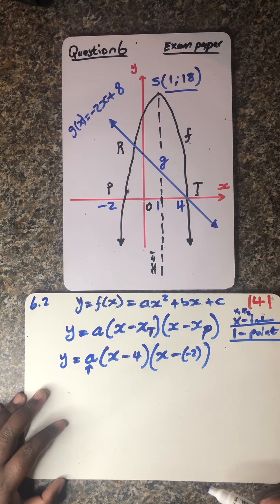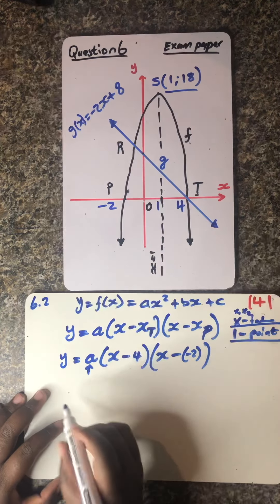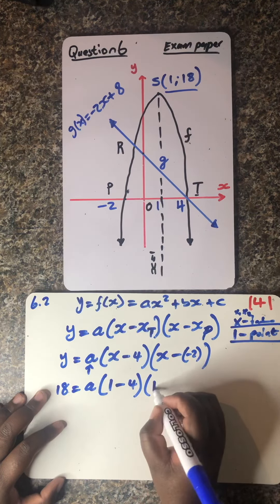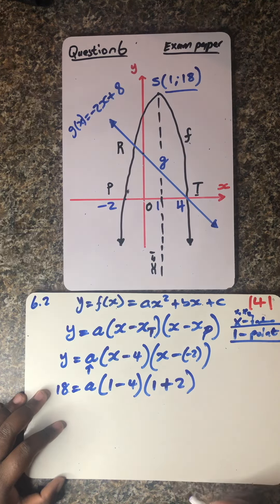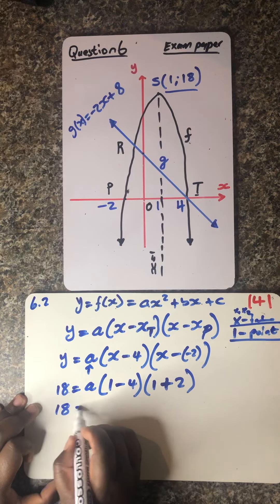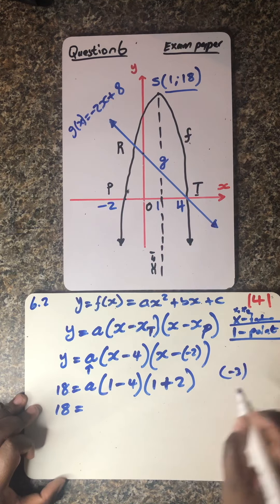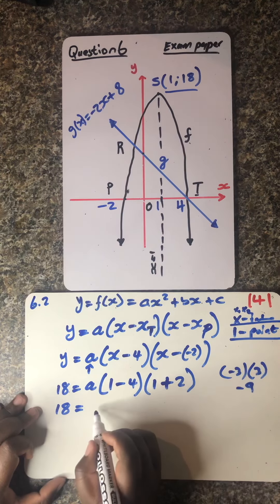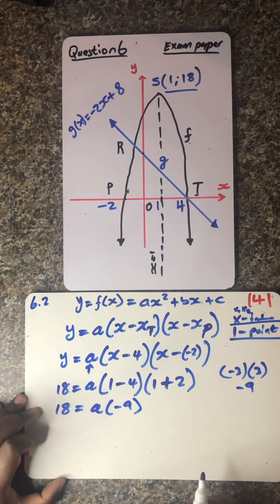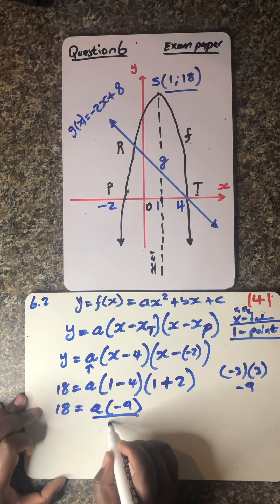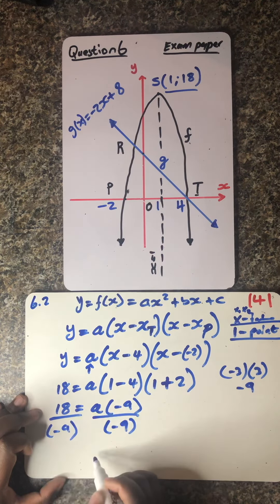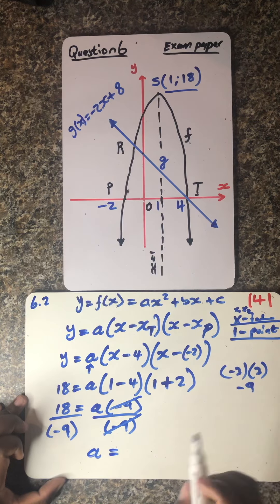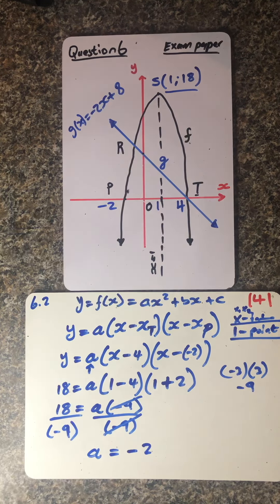We've got that point. What is the y there? It's 18, which is equals to a. What is the x? It's 1 minus 4, then the same x which gives positive 2. So that means we have 18 equals to — I think this is minus 3 and this is 3, with a minus times minus making it negative 9. So it's 18 equals to a into negative 9. You can just divide by negative 9 — it cancels. You remain with a, which is equals to 18 divided by 9 = 2. But remember that minus, so our a is negative 2.